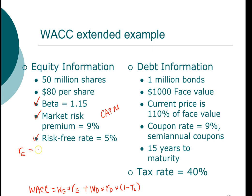According to the Capital Asset Pricing Model, the cost of equity is equal to the risk-free rate of 5 percent plus the systematic risk of the firm — beta of 1.15 — times the market risk premium. Notice that here we are given 9 percent as the market risk premium, not the market return, so we don't have to do any subtraction. The cost of equity for this company is 15.35 percent. I encourage you to pause the video and follow along to make sure you're getting the same numbers.